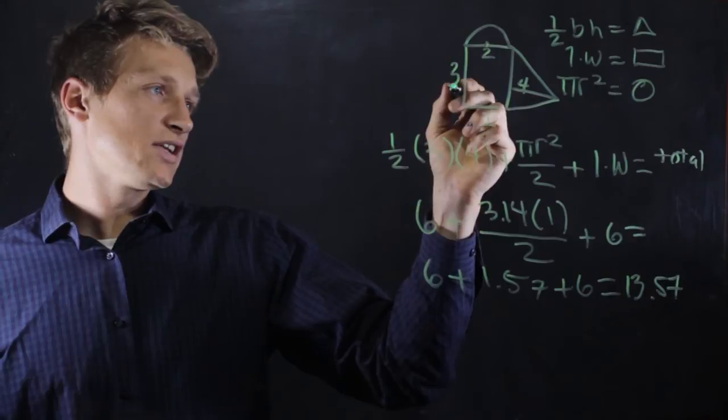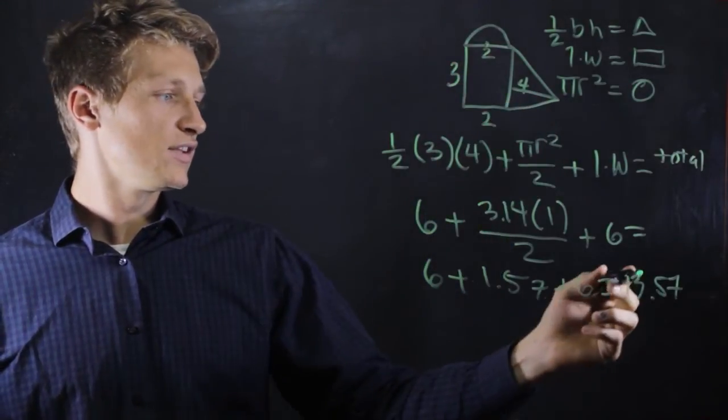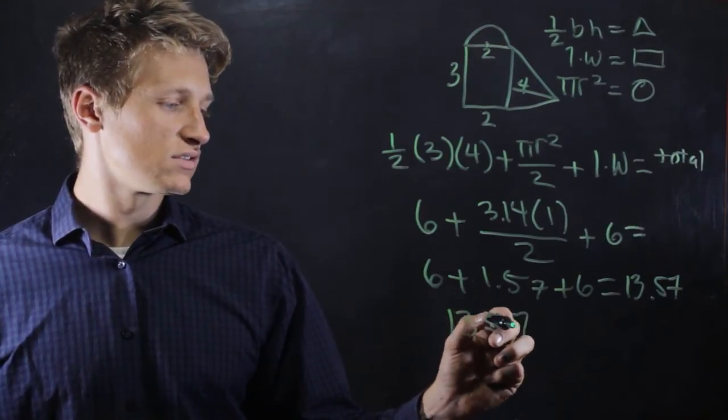So if these were inches, if this was 3 inches long and 2 inches long, then this would be 13.57 inches squared.